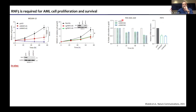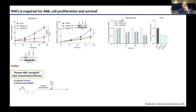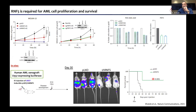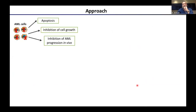We next asked whether RNF5 is also required for the growth of leukemia in vivo. We used the human AML xenograft U937 cell line, a human cell line that expresses luciferase, transduced with an inducible control vector or shRNF5, injected IV into mice, and followed leukemia development. Strikingly, mice injected with RNF5 knockdown cells showed a delay in leukemia development, and these mice survived significantly longer than control mice, suggesting that RNF5 is required for the growth of leukemia both in vitro and in vivo.